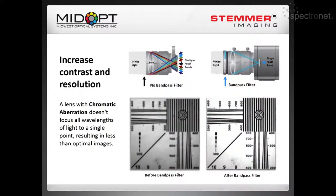We can also increase the resolution by just using optical filters. Every lens has what's called chromatic aberration. With chromatic aberration, a lens will focus at different wavelength planes. If you can limit the amount of planes that enter the system, you can inherently increase the resolution. Here we have a standard lens shooting a lens target, and just by putting a bandpass filter on it, we were able to limit the wavelengths entering the system and increase the resolution.